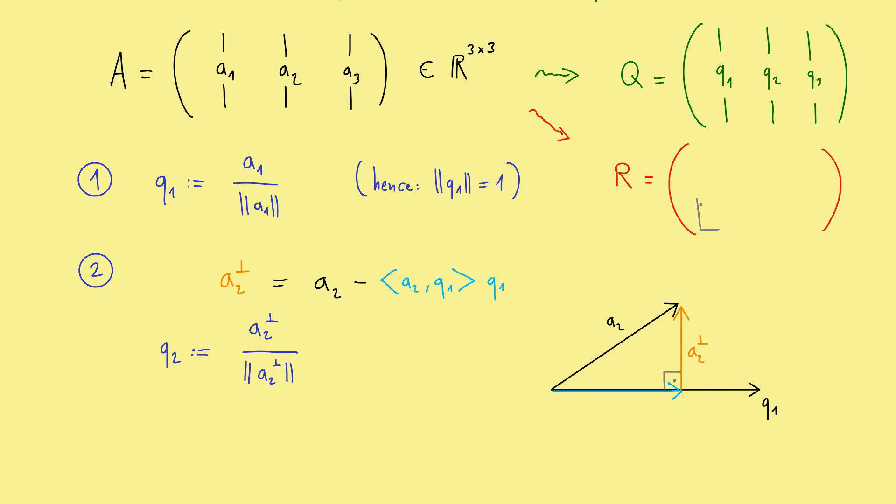So for example, if you look at the first column in R, you have three numbers here. And the first one gets multiplied by the first column here, the second one by the second column, and the third one by the third column here. And this one should get you to the original column A1. In other words, we have a linear combination of these columns here, and what we put in the matrix R are just the coefficients.